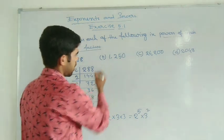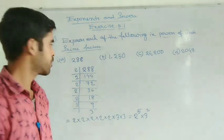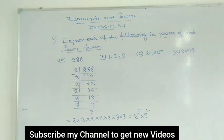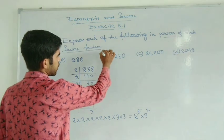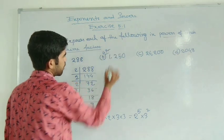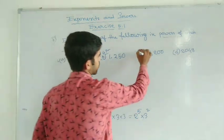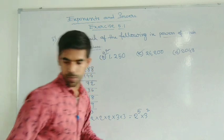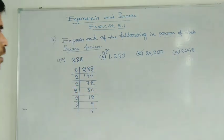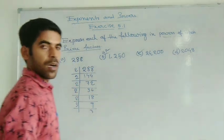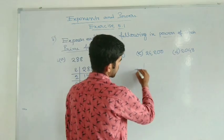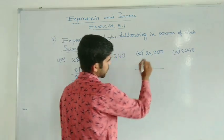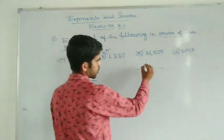Now next — part B you write yourself. Now I will show you part C. See equation number C — the same process. You have to factorize this in the prime factorization method. The number is 24200.